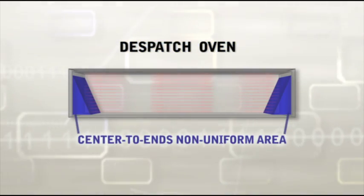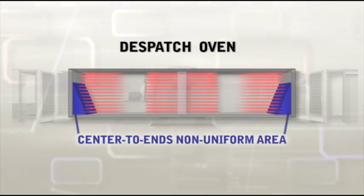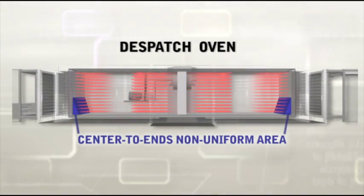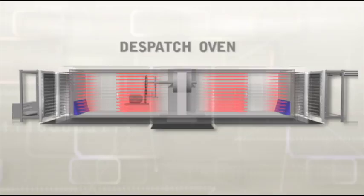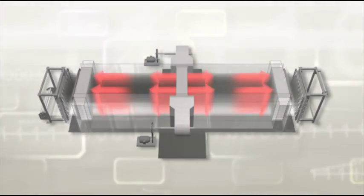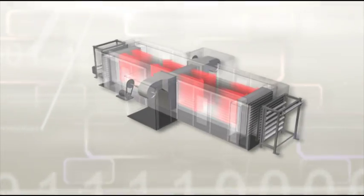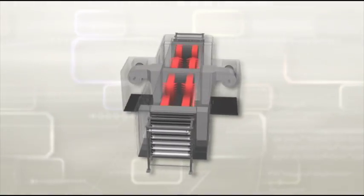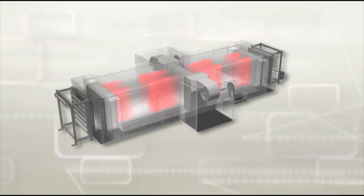By using the Despatch center-to-ends airflow technology, we are able to greatly reduce the non-uniform end areas. This extends the active heated length by up to 25%. The oven operates at consistently higher temperatures without reaching uncontrolled exotherm.